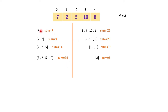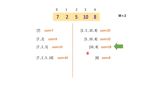Now checking the maximum sum in each pair: the first pair has maximum 25, the second has maximum 23, the third has maximum 18, and the fourth has maximum 24. The minimum among all these is 18. So 18 is the result we have to find. One observation is that the result occurs when both parts are closest to each other in value — 14 and 18 are much closer compared to the other splits.